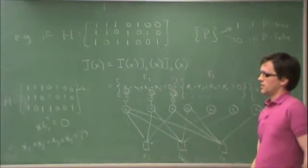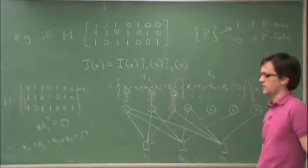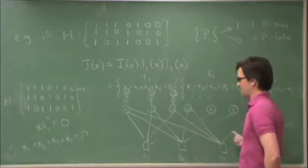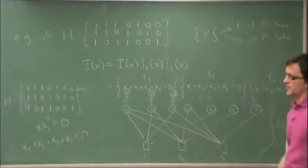In other words, each row will contain, let's say, six ones. Each column will contain, let's say, three ones. So therefore, the connections in this factor graph will be very sparse. Therefore, most cycles will be quite large.